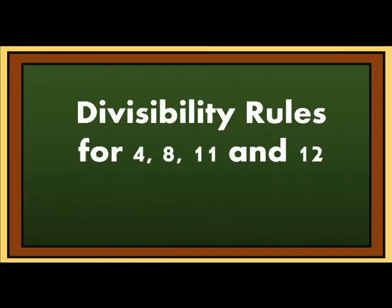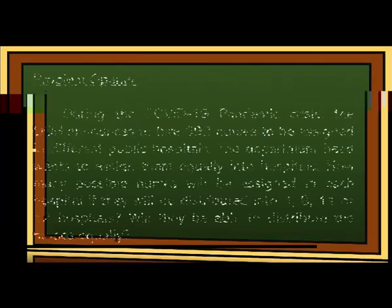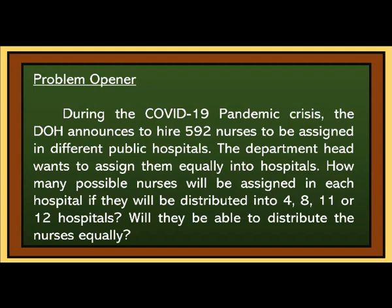Good day, everyone. This video is about the Divisibility Rules for 4, 8, 11, and 12. During the COVID-19 pandemic crisis, the DOH announced to hire 592 nurses to be assigned in different public hospitals. The department head wants to assign them equally into hospitals. How many possible nurses will be assigned in each hospital if they will be distributed into 4, 8, 11, or 12 hospitals? Will they be able to distribute the nurses equally?